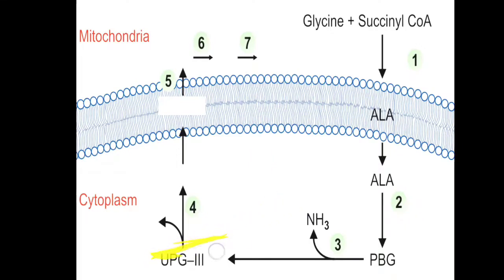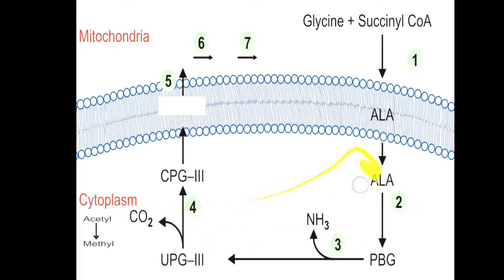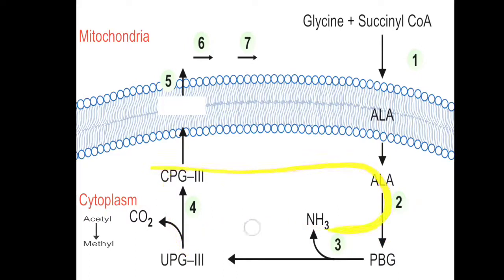From UPG3, carbon dioxide is removed by the enzyme UPG decarboxylase. The acetyl group present on UPG3 is converted to a methyl group, and finally coproporphyrinogen 3 (CPG3) is generated. These reactions — ALA to PBG, PBG to UPG3, and UPG3 to CPG3 — all occur in the cytoplasm. CPG3 then shifts to the mitochondria.